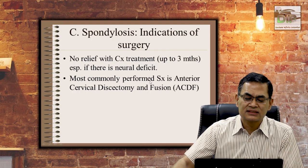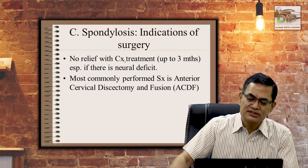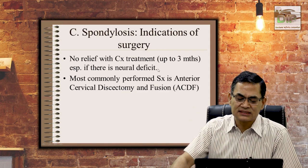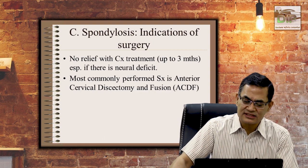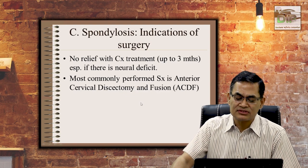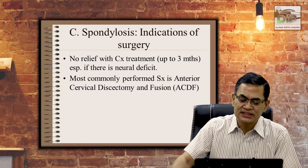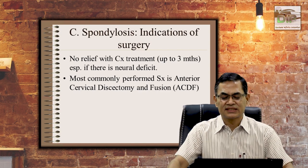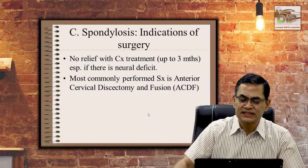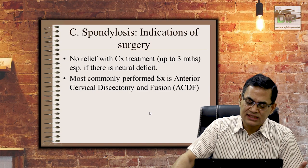If medications don't work, surgery is the only option. Always give a trial of three months of conservative treatment before advising surgery. The most commonly performed surgery is anterior cervical discectomy and fusion, in which the disc between the involved vertebrae is removed and a bone graft is placed. A plate may be added anteriorly — particularly in trauma cases — but the graft alone may suffice.